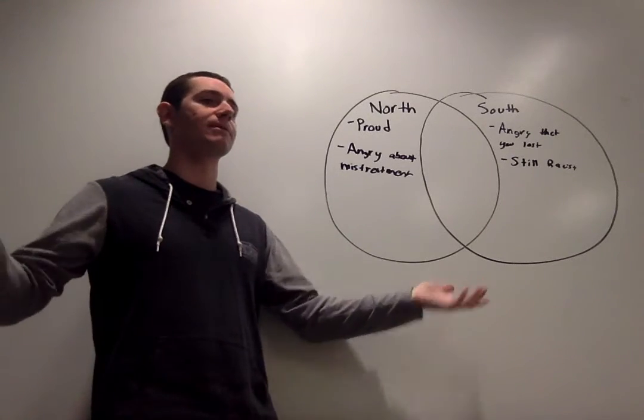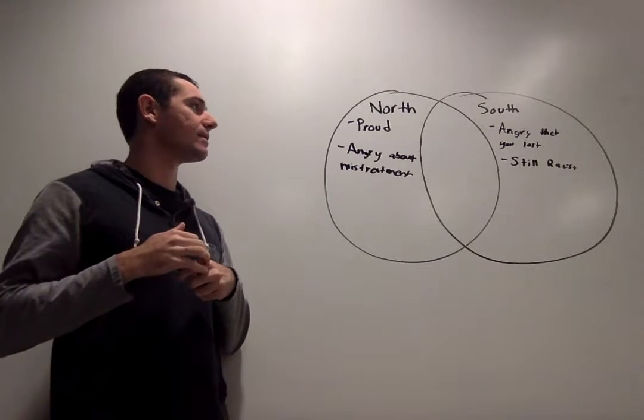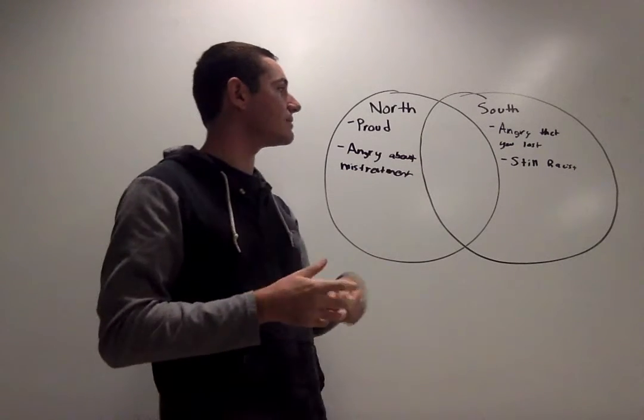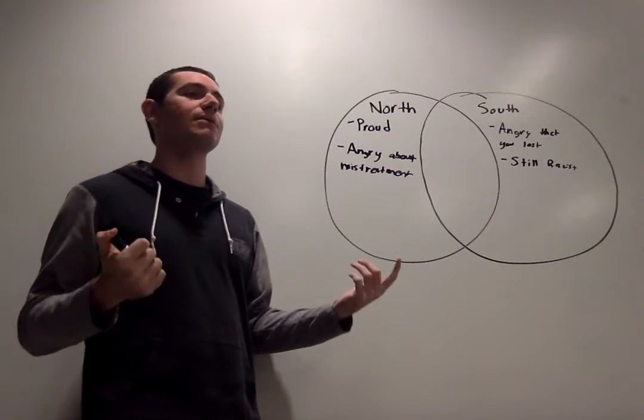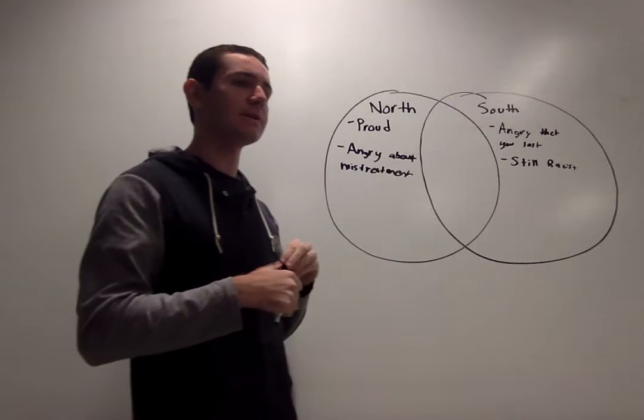Things were pretty much still similar in terms of the thought processes of Southerners. They didn't suddenly become, oh, I shouldn't be racist. It was still sort of the same thing. And, you know, the anger part's going to come into play again because they're going to be angry about that someone is telling them how to think and telling them how to act.